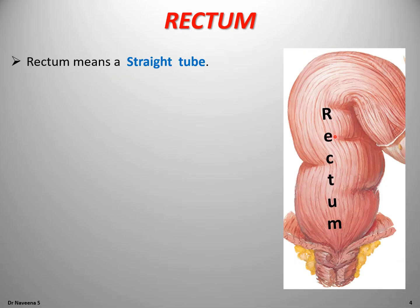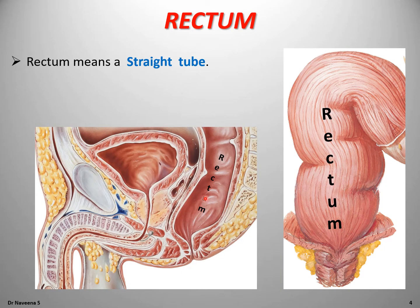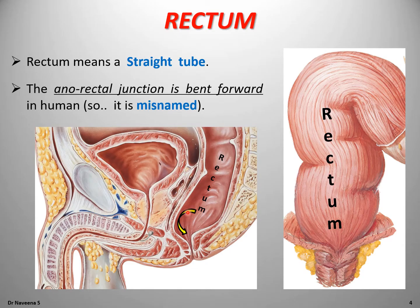Rectum means a straight tube; however, it is misnamed in humans. When viewed from laterally, it shows a forward bend at the anorectal junction. So it is not a straight tube in humans.